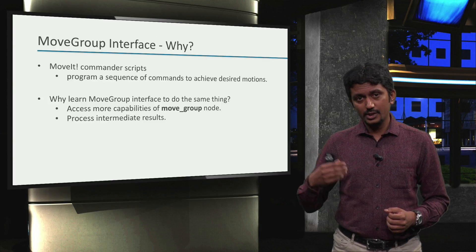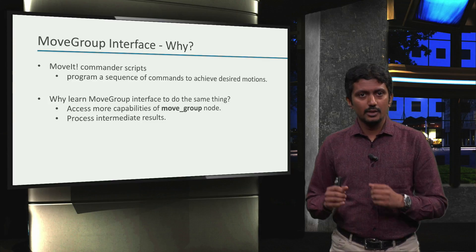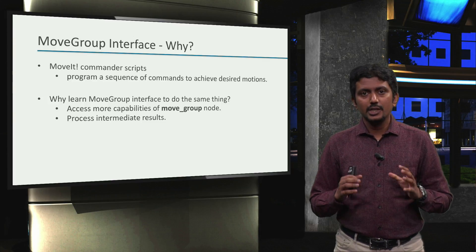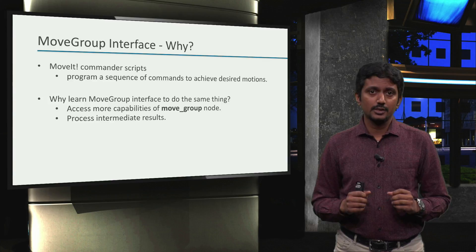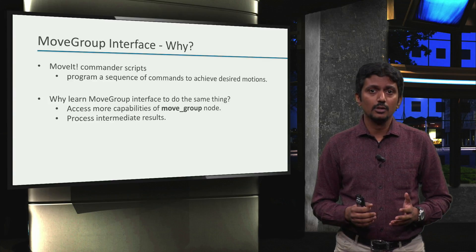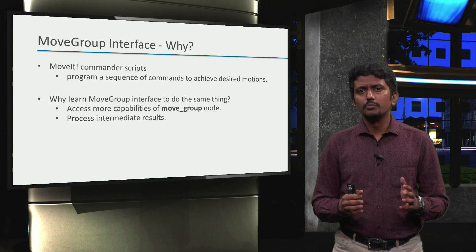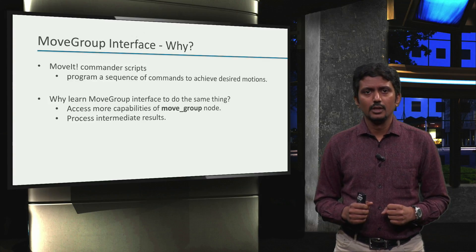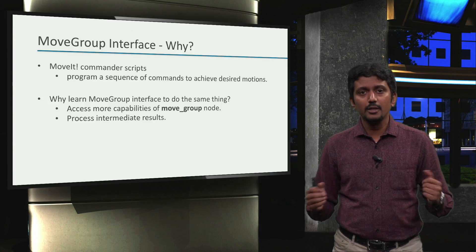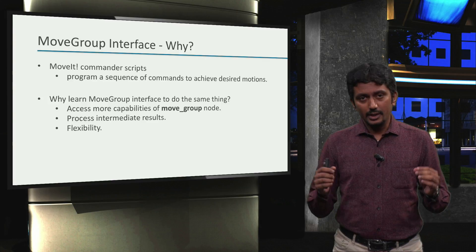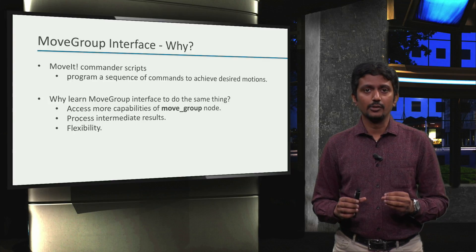Moreover, we can process intermediate results in our program. For example, the go_named_target command we saw in the last video actually does multiple things internally: first setting the named target as the goal, then planning a trajectory to the goal, then time-parameterizing it, and then sending the trajectory to moveit. But we might want to post-process the motion trajectory — for example, to examine it for unexpected changes in robot configuration due to the use of randomized planners. In essence, explicitly using the movegroup interface gives us flexibility in designing our application.